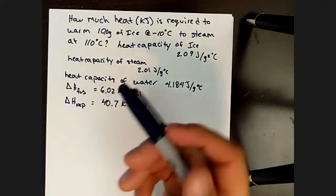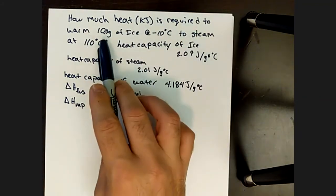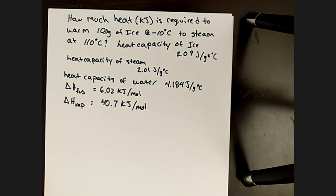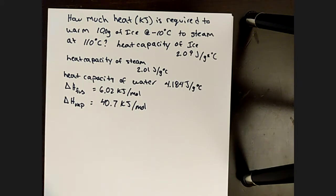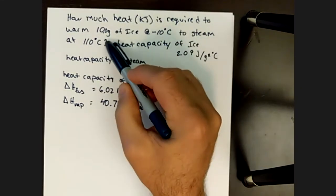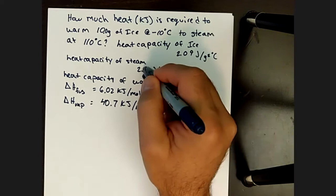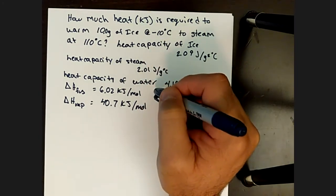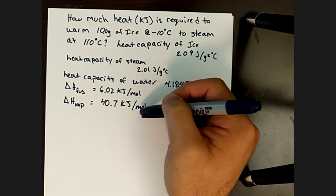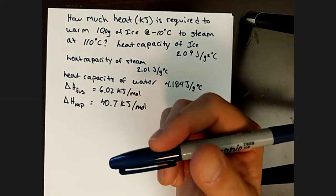In this case, oftentimes when we first start out, we're looking at how much heat in kilojoules is required to warm 10 grams of ice at negative 10 degrees to steam at 110 degrees. If you're doing this in a book, oftentimes this may be all the information they give you up to the question mark, and then they may throw in the heat capacity of ice and heat capacity of steam. If they're giving you everything, they would also include the heat capacity of water, the delta H of fusion, the delta H of vaporization. There's a lot of information here to parse out.